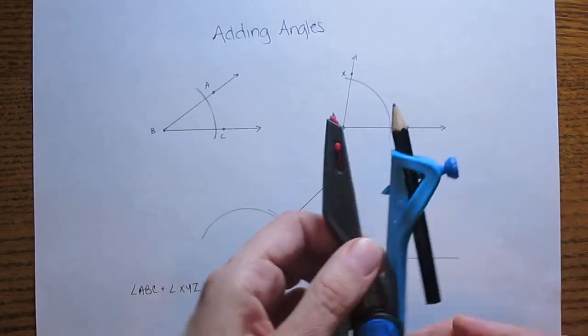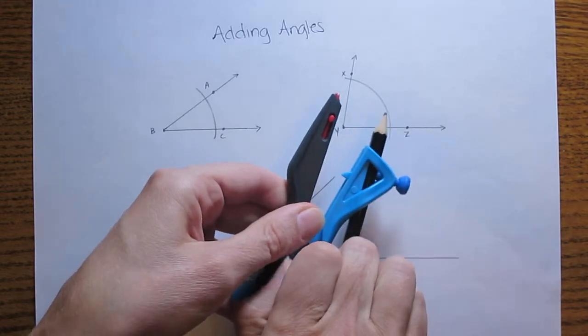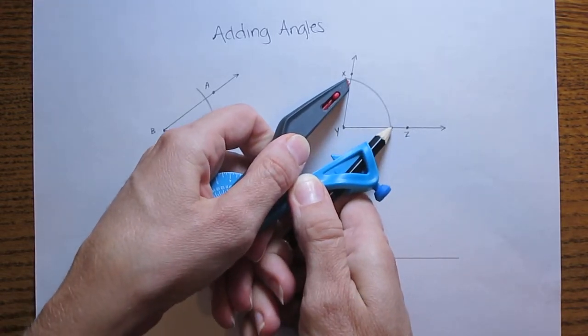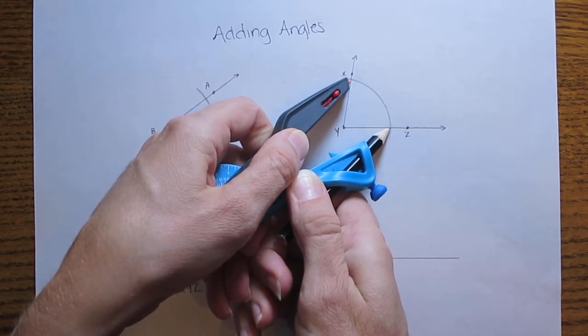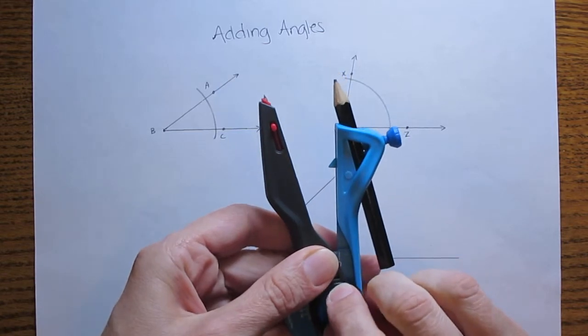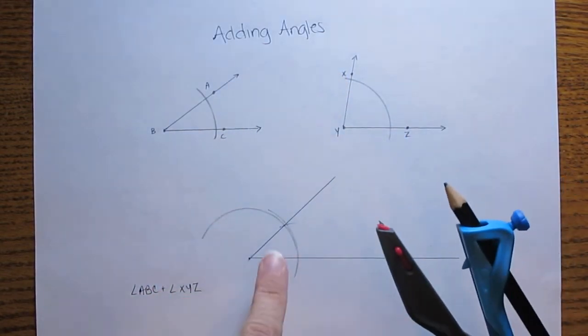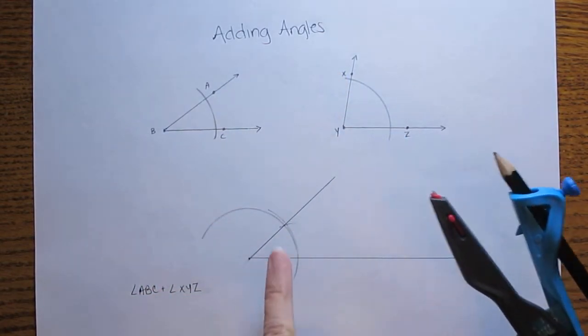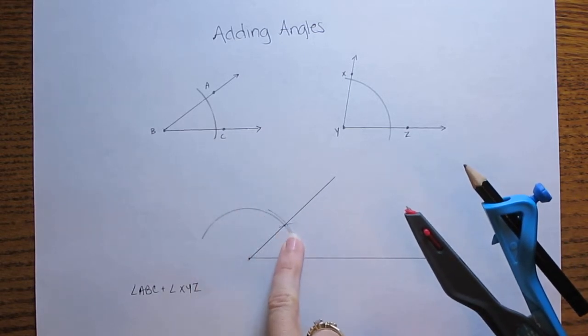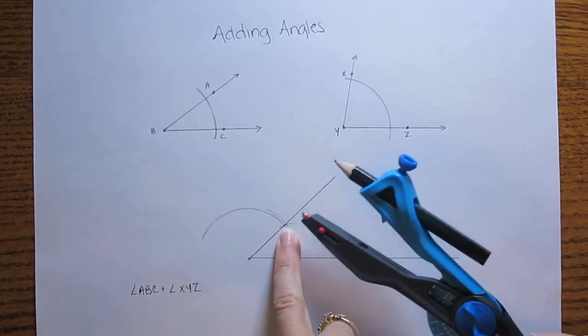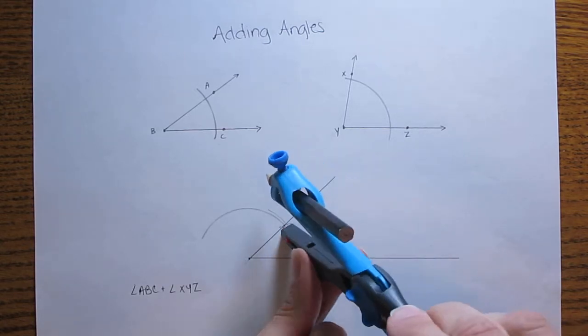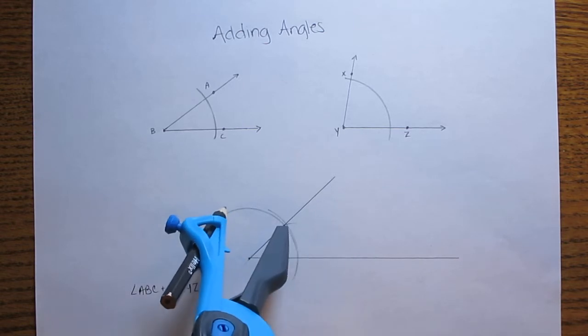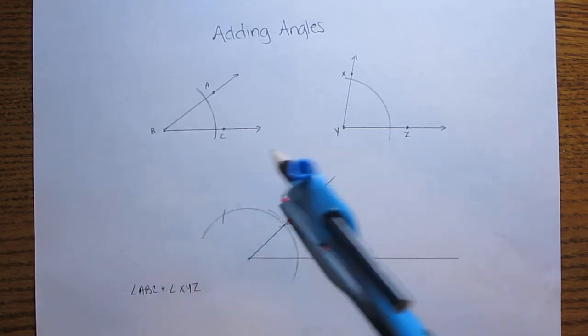Now we go back to this second angle and we open up our compass to match the width of the angle where the arc passed through it. So once I have that I'm going to set my compass, I'm going to take that distance back over here again. Right here is where that new arc intersected this side of my angle so I'm going to put the sharp end of the compass down there and I'm going to make a mark on the arc that I made earlier.